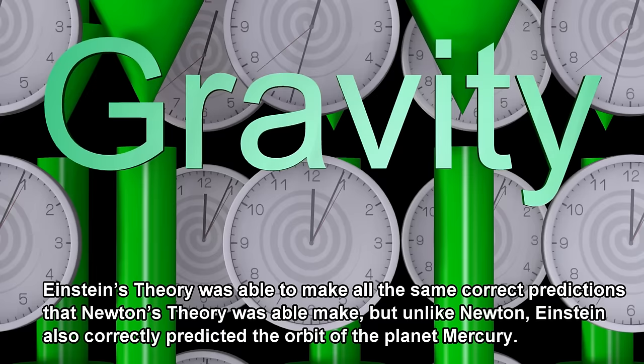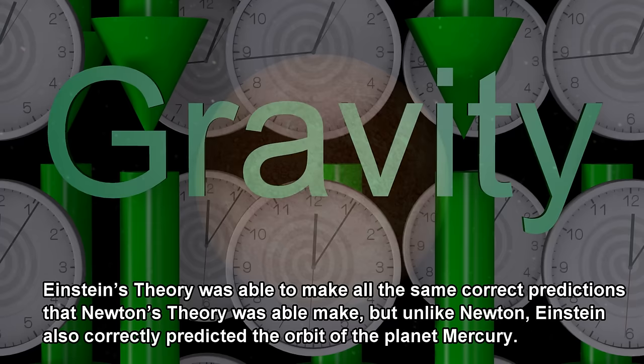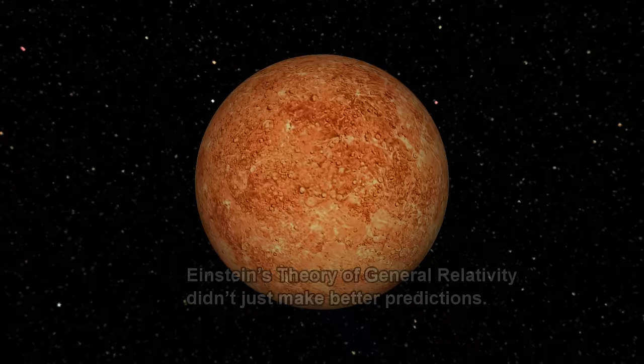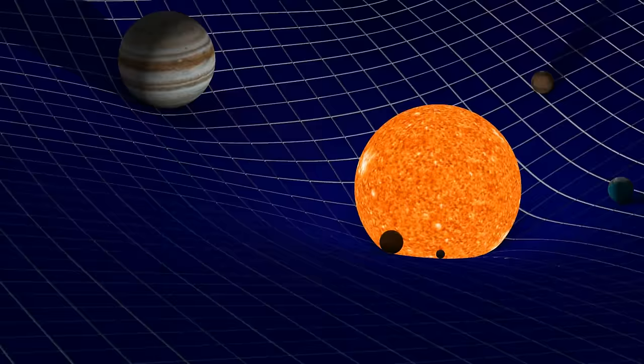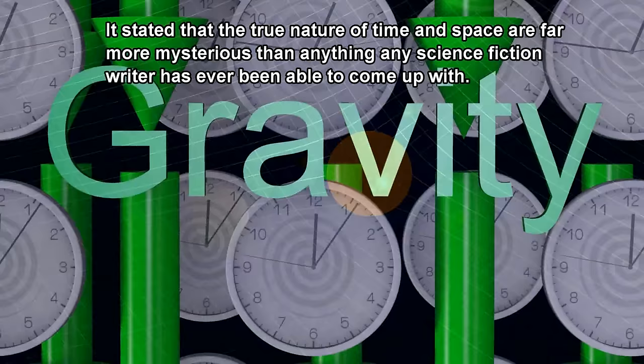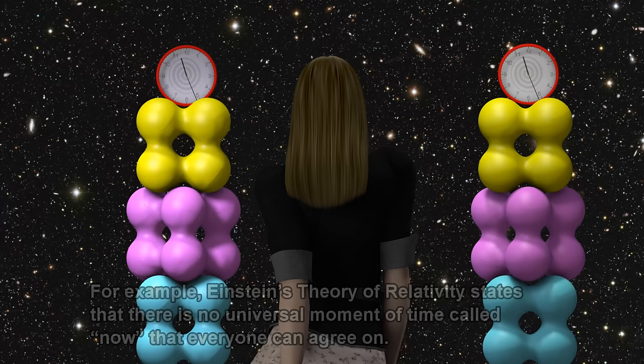Einstein's theory was able to make all the same correct predictions that Newton's theory was able to make, but unlike Newton, Einstein also correctly predicted the orbit of the planet Mercury. Einstein's theory of general relativity didn't just make better predictions — it stated that the true nature of time and space are far more mysterious than anything any science fiction writer has ever been able to come up with.